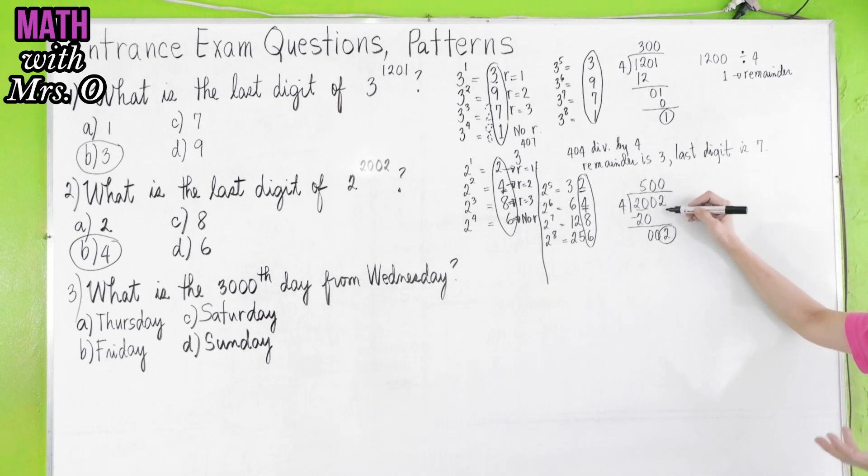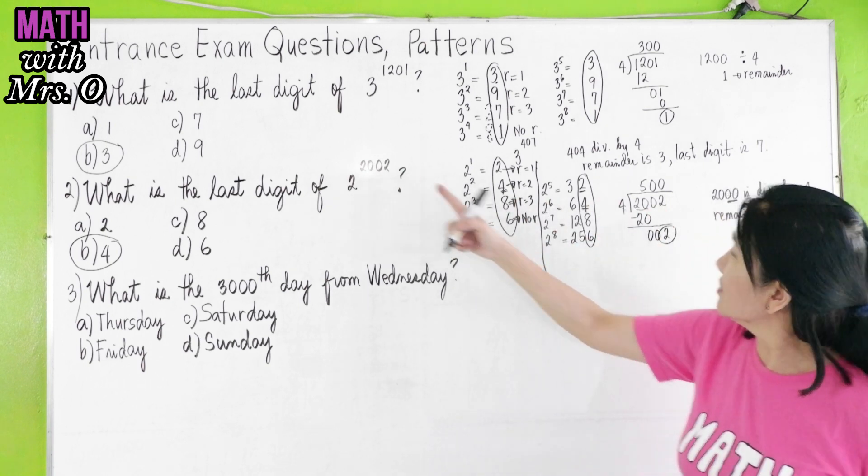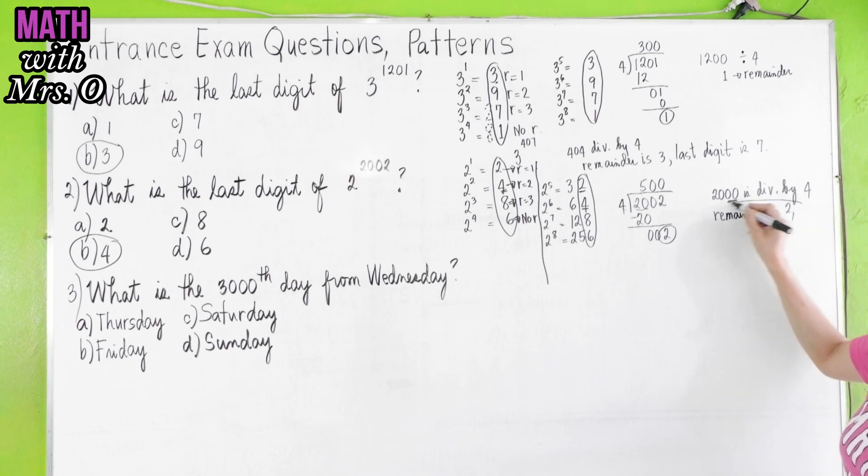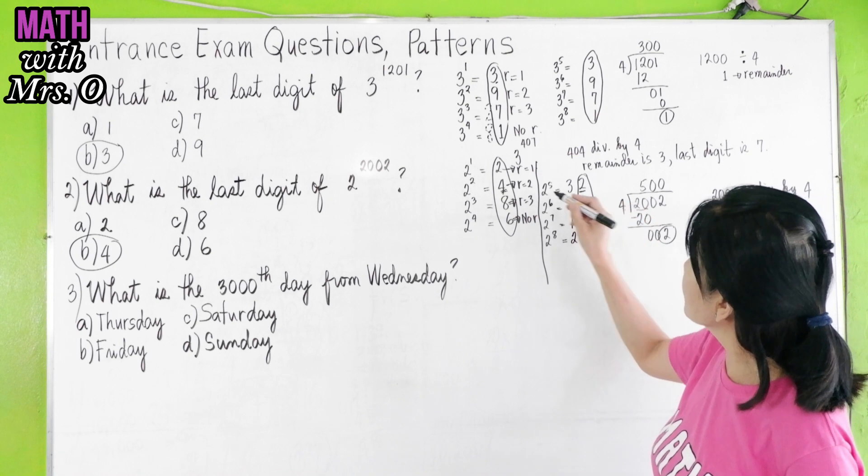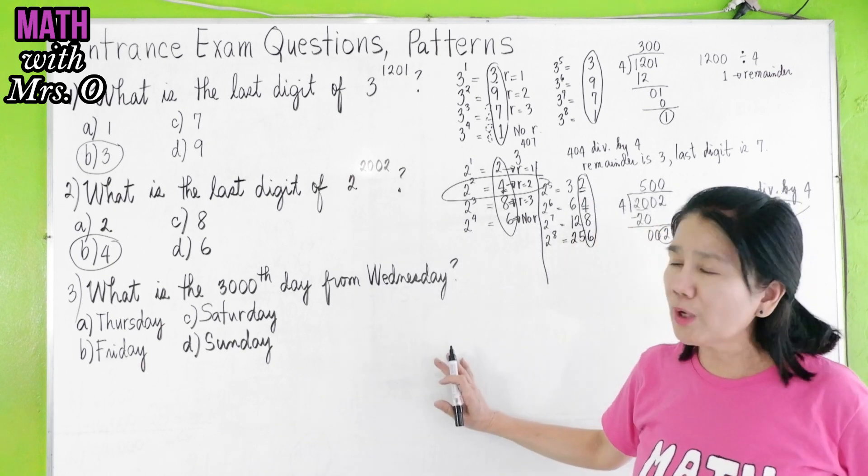Let's say you don't want to divide like this. What do you do? You just use the divisibility of 4. 2,000 is divisible by 4. Why? A number is divisible by 4 if the last two digits are 0, 0. So therefore, what is your remainder? Your remainder is 2. Why 2? 2,002 minus 2,000 gives your remainder of 2. So if the remainder is 2, your last digit is 4. Our answer here is letter B.